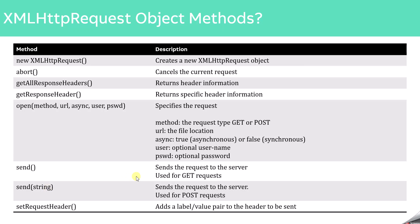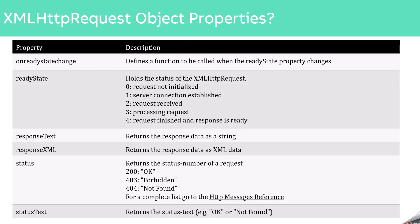When the server provides the response, you can read it using the responseText property, which returns the response data as a string. If you want the response as XML, use the responseXML property. The status property returns the HTTP status code — 200 means the request was successful, and 404 means the requested resource was not found. A complete list of HTTP status codes will be linked in the description.